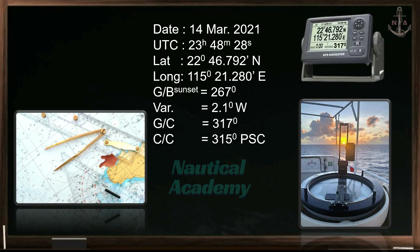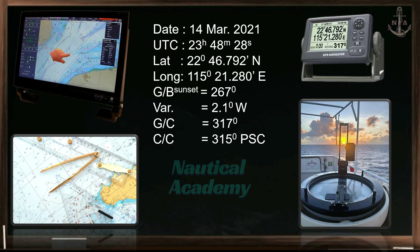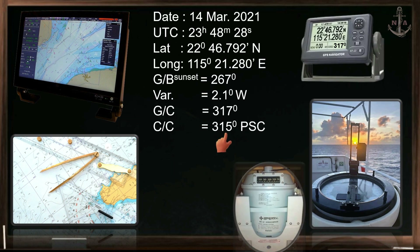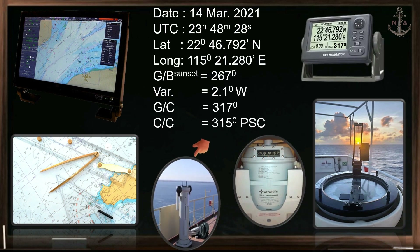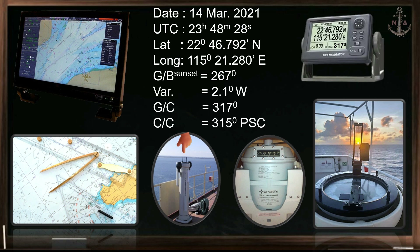Take the variation from the navigational chart or from the ECDIS. The gyro course should be taken from the master gyro compass, and the compass course will be taken from the ship's magnetic compass. PSC means per standard compass, and it refers to the heading or bearing measured from the ship's magnetic compass.